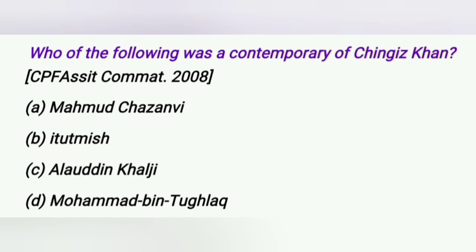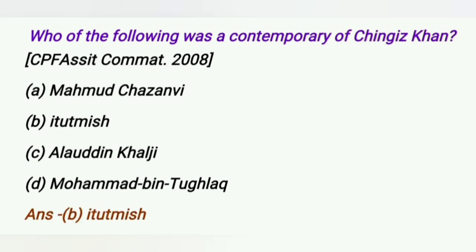Who among the following was a contemporary of Genghis Khan? A. Mahmood Ghaznavi, B. Iltutmish, C. Alauddin Khalji, D. Muhammad bin Tughlaq. The answer is Iltutmish.